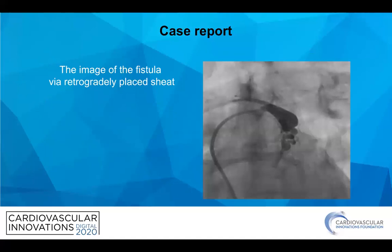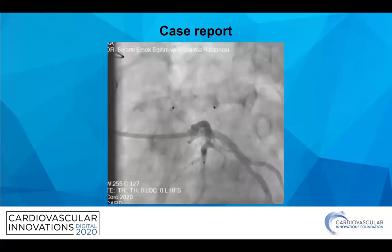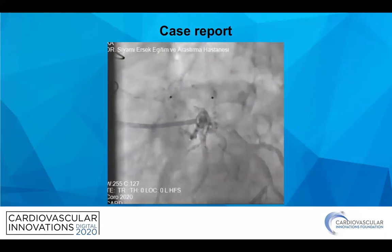In this slide you can see the image of the fistula via the retrograde-placed sheath. With this sheath we delivered very cautiously a duct occluder — we used the Amplatzer duct occluder, 6 by 6 millimeters — and before releasing it we performed a tug test. After waiting around five to ten minutes, we took a shot and confirmed that we had totally occluded the fistula formation.